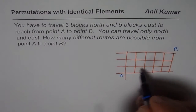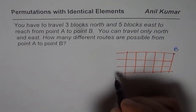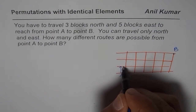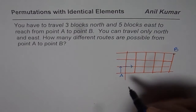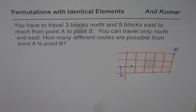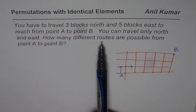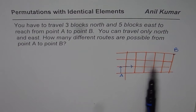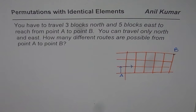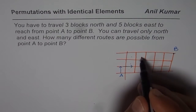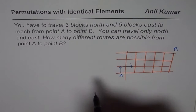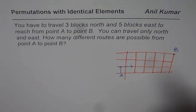You have to go from A to B. You could travel north or east. That is how you could travel to reach from A to B. Now you need to find how many different routes are possible to reach from A to B. At least what you have to do is go 1, 2, 3 up and then 1, 2, 3, 4, 5 on the right — 5 blocks.